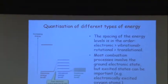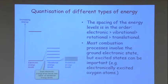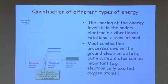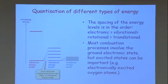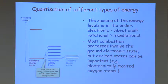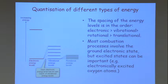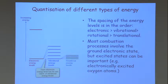Then we have rotational energy levels, which are even more closely spaced, and each vibrational energy level has a set of rotational energy levels. Finally, molecules can move through space, giving us translational energy levels. An important quantity is the spacing of these energy levels compared with the thermal energy — compared with RT for a molar system or kT for a molecular system.